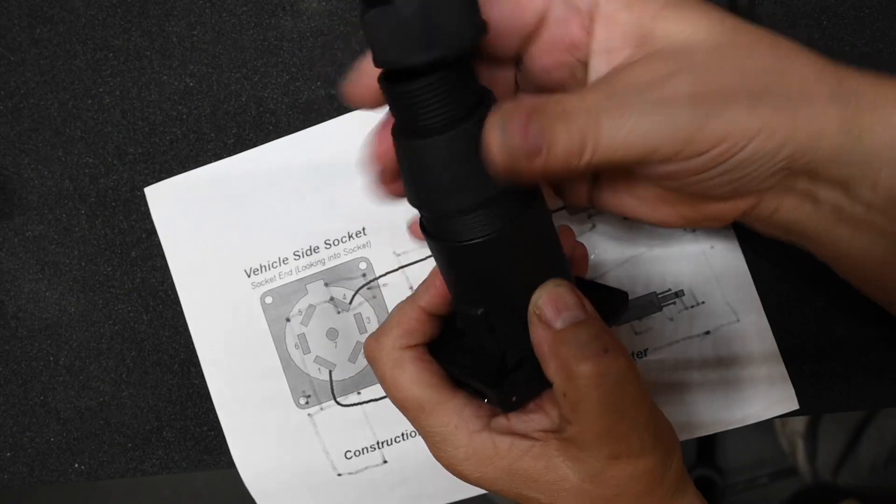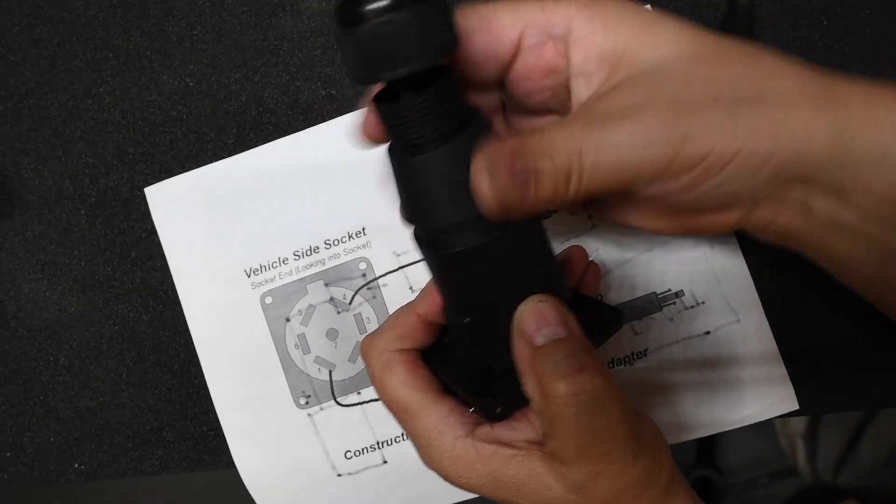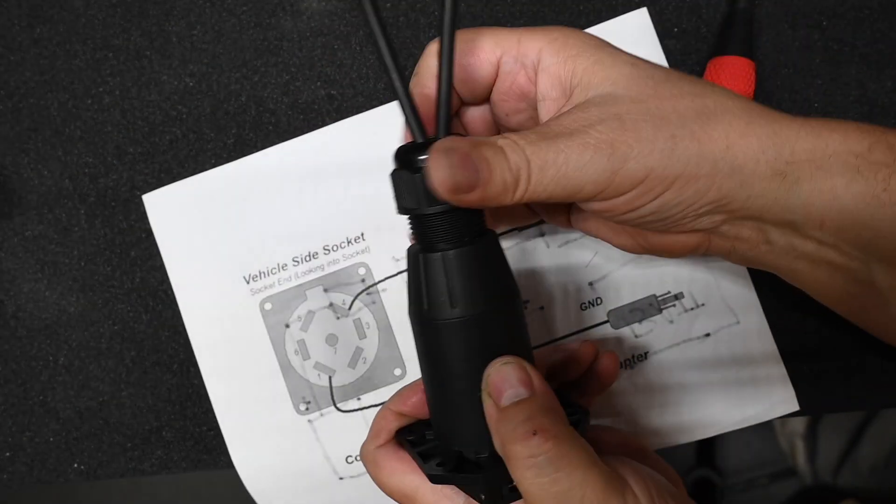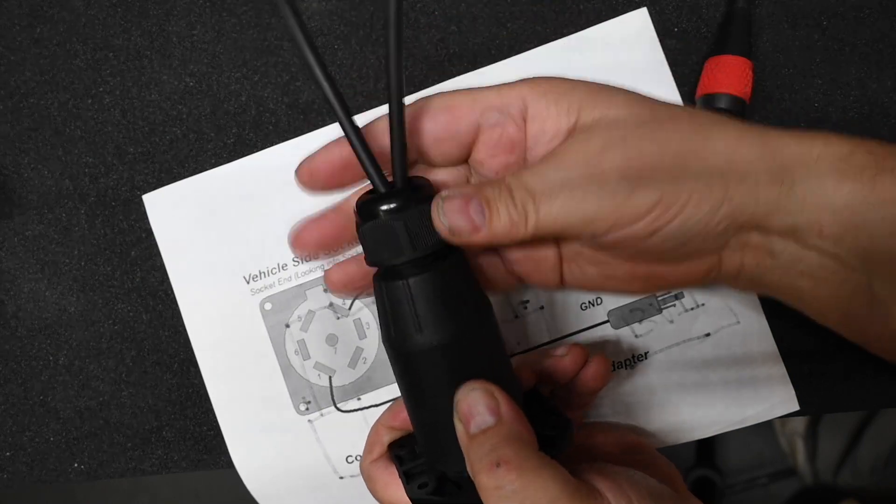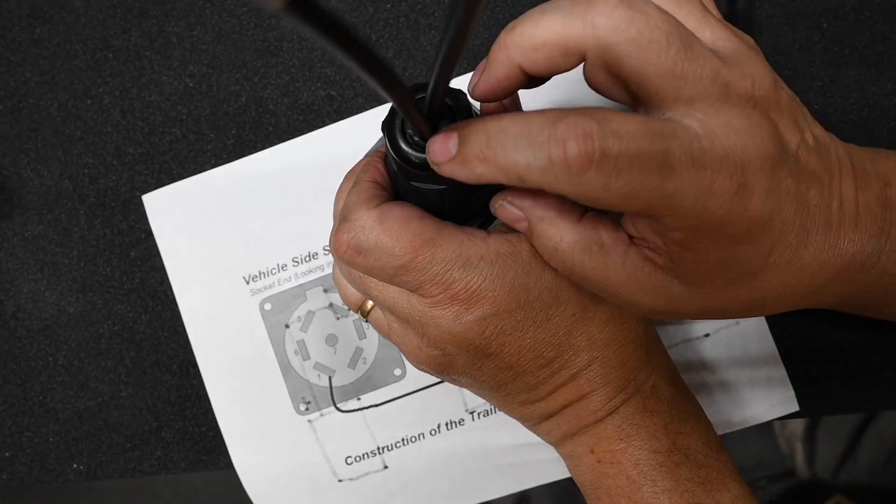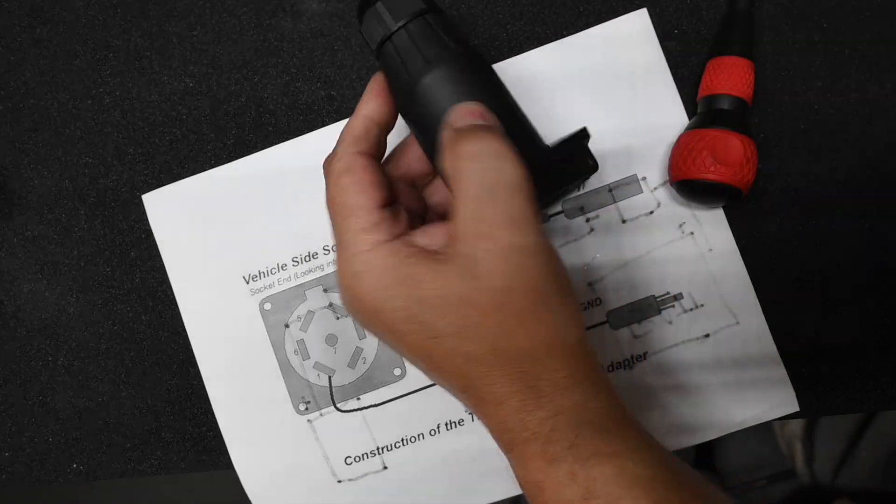just simply tighten the collar down. Before you tighten it down, put some silicone in here or something and that would completely waterproof it.